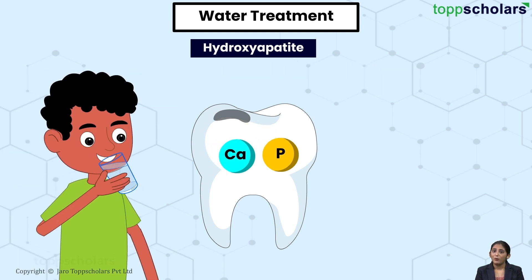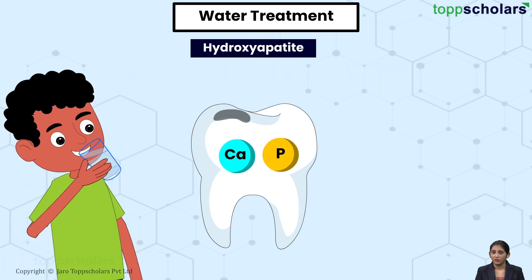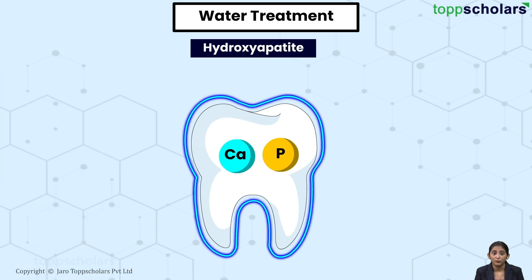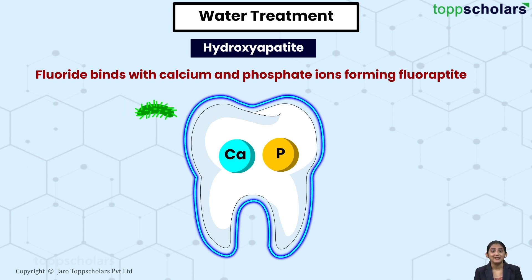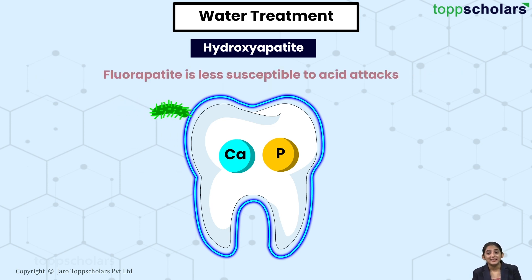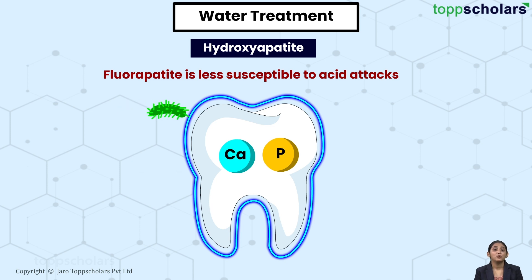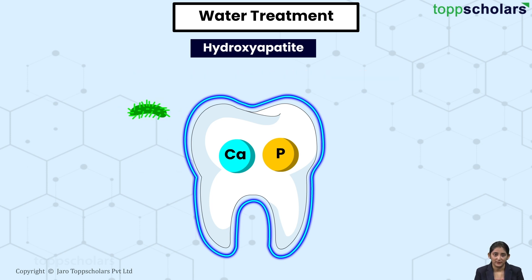When we drink water containing fluoride, the fluoride binds with calcium and phosphate ions, forming fluorapatite that is less susceptible to acid attacks. And so, it helps to stop the tooth decay process.